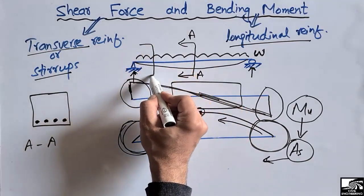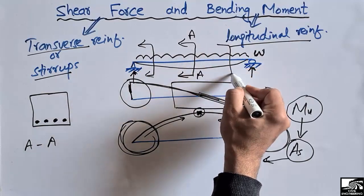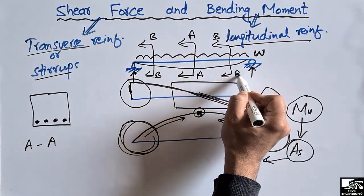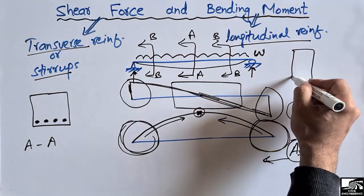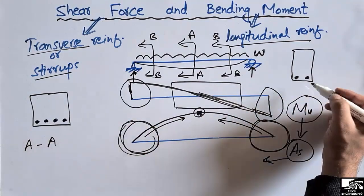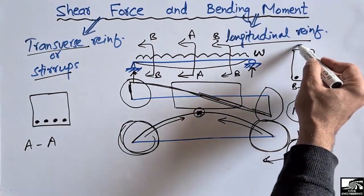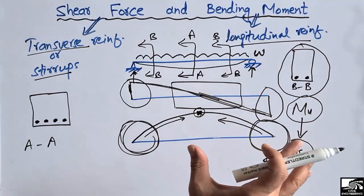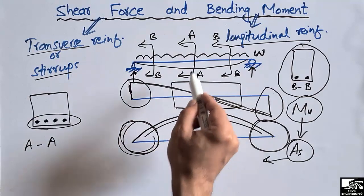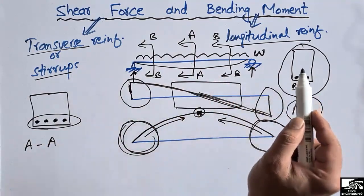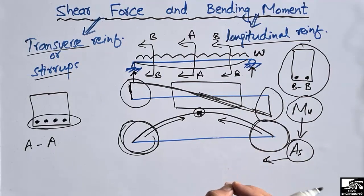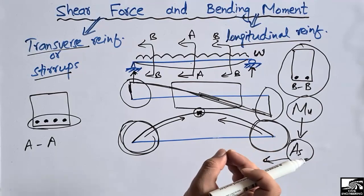Now if we look at section BB, where there is low bending moment, the BB reinforcement will mainly be two or three bars — less than the AA section. So the reinforcement detail depends on the bending moment diagram: at mid-span we have more steel bars because of high bending moment, and at the supports we have fewer steel bars because of low bending moment. The bending moment diagram shows us where the maximum bending moment is and where we should provide the steel bars accordingly.